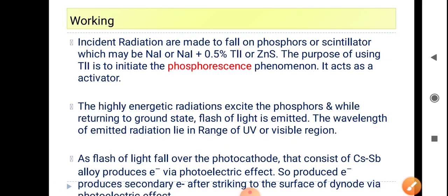Coming to the working, incident radiations are made to fall over the phosphor or scintillator, which may be sodium iodide, or sodium iodide with 0.5% thallium iodide, or zinc sulfide. The purpose of using thallium iodide is to initiate the phosphorescence phenomenon, and it acts as an activator.